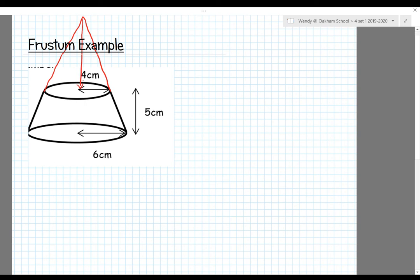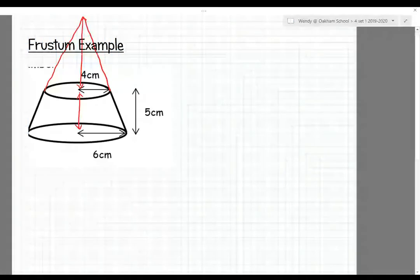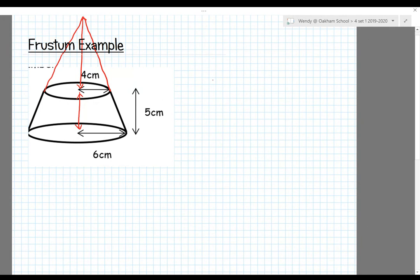We've got this little cone on top with a small triangle. Let's call the height of that triangle x. The big cone has a base of 6 cm at the bottom, and the height of the full cone is x plus 5, since the frustum height is 5 cm. These two are similar triangles because